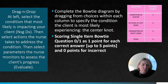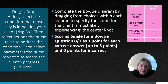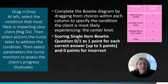In summary for the drag and drop: select the condition most likely impacting your client — the nursing diagnosis — as the center knot. Select the actions the nurse takes to address the condition. Then select the parameters the nurse monitors to assess the client's progress. Make sure the patient stays within the parameters of pulse ox greater than 90 and less than 96. If you cannot keep him greater than 90 even at three liters, contact your provider — he may need a higher level of care.